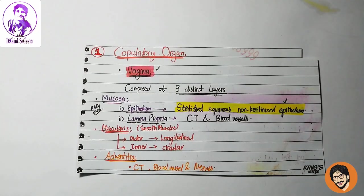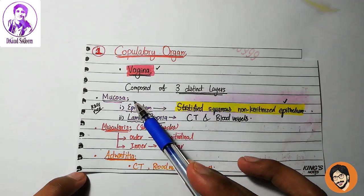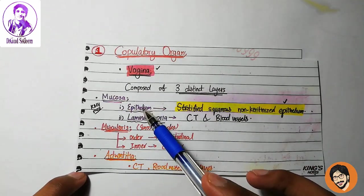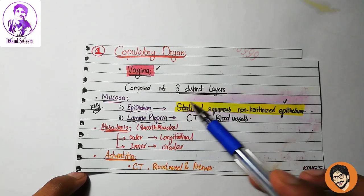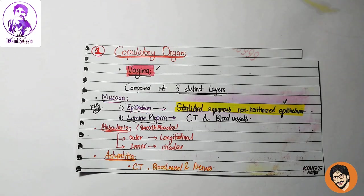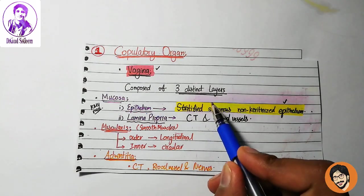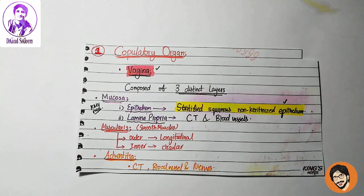What is the vagina histologically? It is composed of three distinct layers: mucosa, muscularis, and adventitia. The mucosa has epithelium and lamina propria. The epithelium is stratified squamous non-keratinized epithelium. If you recall from the previous lecture, the most difficult epithelium was pseudostratified columnar ciliated epithelium. But here it is stratified squamous — the opposite.